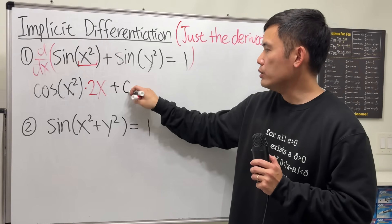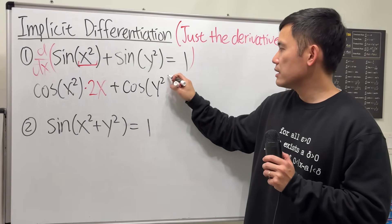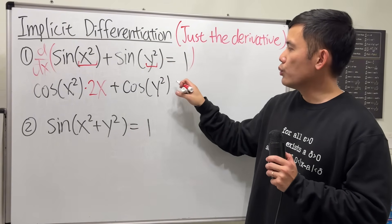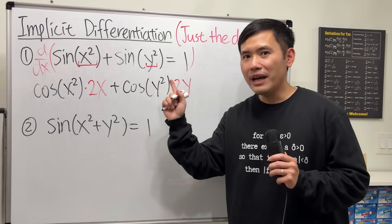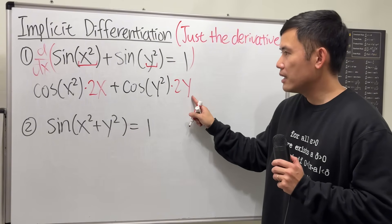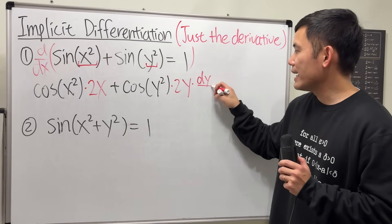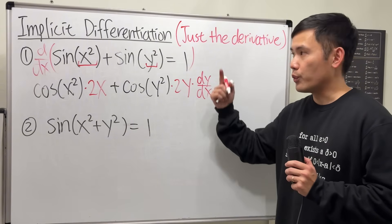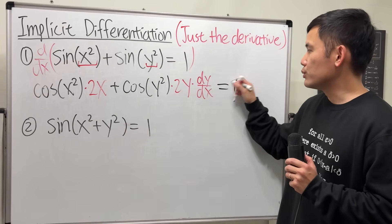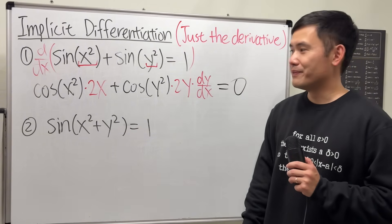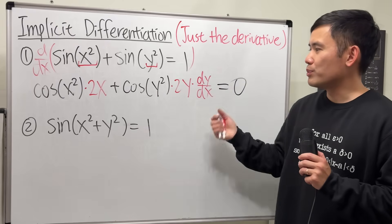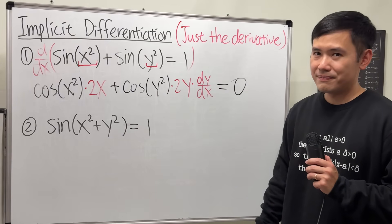Look at the inside, take the derivative — the derivative of x squared with respect to x is just 2x. So that part's done. Then we add the next term: the derivative of sin is again cosine, the input stays the same. Look inside and take the derivative, which is going to be 2y. But y is a function of x, so when we take the derivative of y squared, not only do we get 2y, we also need the dy/dx — this is the chain rule part of implicit differentiation. And lastly, the derivative of 1 is 0. That's the first one. I'm not going to simplify anything further.